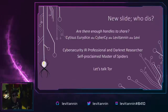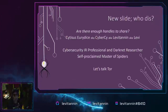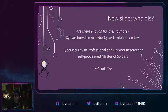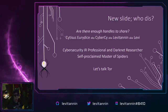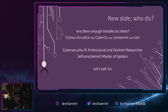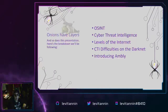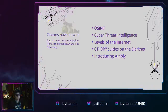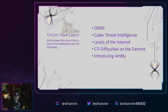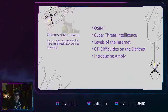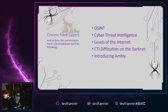Before we get ahead of ourselves, let's talk a little bit about Tor, because we are going to be talking Tor a lot today. Keep in mind that Tor is not the only darknet access point, so we will be mentioning a few others as well. Let's talk about the different layers of this presentation: we're going to cover open source intelligence or OSINT, cyber threat intelligence abbreviated as CTI, the different layers of the internet, the difficulties of finding CTI on the darknet, and finally Ambly — a smart darknet spider specifically designed for cyber threat intelligence. So let's get started.